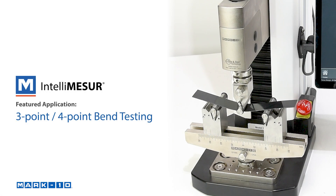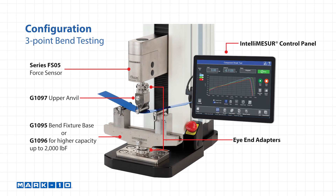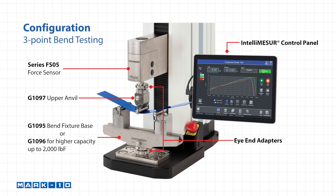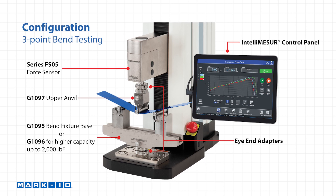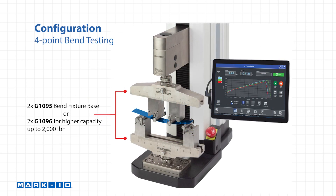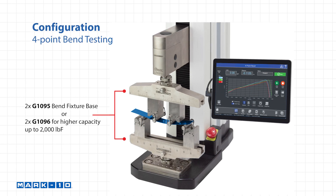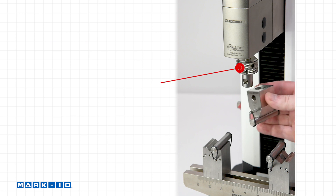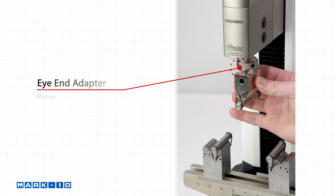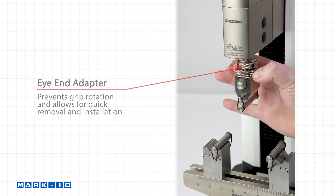Hello and welcome. This video features Mark 10's IntelliMeasure software. Let's take a look at the setup. We'll be doing some 3- and 4-point testing. Here's the configuration for 3-point bend testing, and also 4-point tests. You can see the G1097 Anvil is replaced with a second G1095 bend fixture base. Eye-end adapters prevent grip rotation and allow for quick removal and installation.